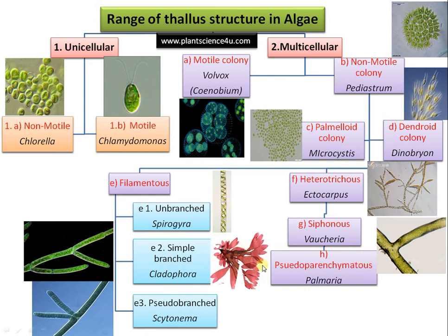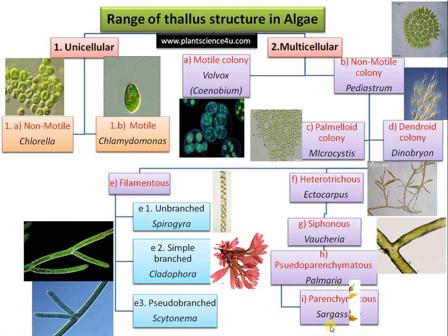The next organization is pseudo-parenchymatous, as in Palmaria, the red alga, where filaments are closely aggregated giving a parenchymatous appearance. Finally, the formation of true parenchyma is seen in Sargassum — the large brown alga that forms the Sargasso Sea. You can see leaf-like structures that are truly parenchymatous. Another example is Ulva of Chlorophyceae.